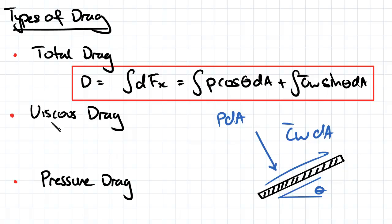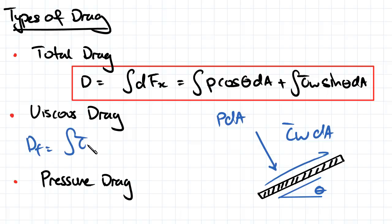To work out the total drag acting on a body, that's going to be related to the actual components of our fluid velocity acting in the parallel direction to our body, giving us our viscous drag, and then perpendicularly or normally to our surface to give us our pressure drag component. The viscous drag force DF is equal to the integral of the wall shear stress times sine theta dA — taking the integral of our shear stress times sine theta to get the component parallel to the surface, integrated over our area to give us that force.